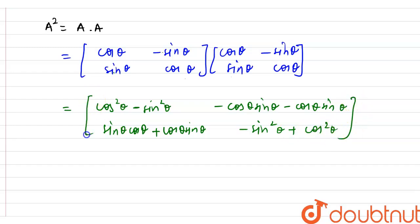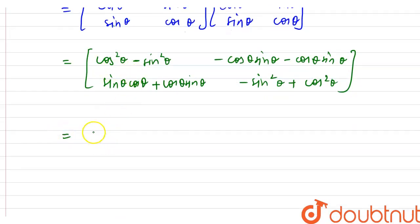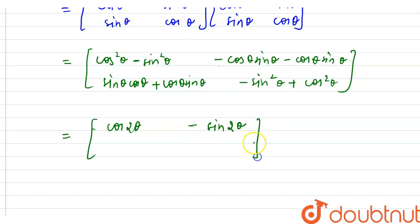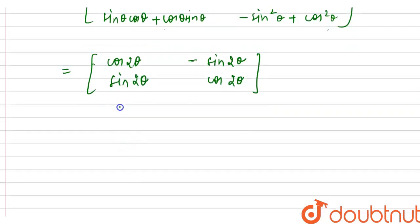cos²θ - sin²θ is the formula for cos 2θ. And -cos θ sin θ - cos θ sin θ can be written as -2 sin θ cos θ, which equals -sin 2θ. Similarly, 2 sin θ cos θ is sin 2θ, and cos²θ - sin²θ is cos 2θ. So A² equals the matrix: cos 2θ, -sin 2θ, sin 2θ, cos 2θ.